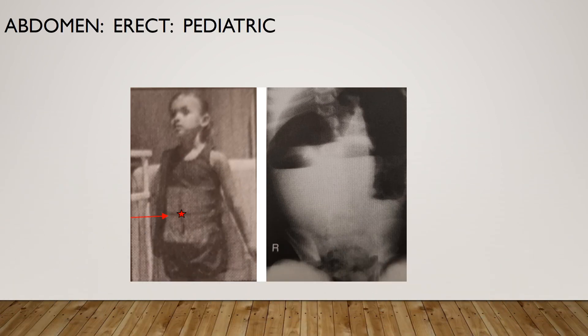For the pediatric erect abdomen, the child is standing with arms at the sides. Use parental assistance if necessary — make sure they are wearing lead and are not pregnant. For infants and young children, the central ray is one inch above the umbilicus; for older children, it is at the level of the umbilicus. On the x-ray, verify soft tissue and gastrointestinal structures, air-fluid levels on the erect, and diaphragms and symphysis pubis included if possible. Verify optimal density and contrast for soft tissue and skeletal structures with no motion. Have a good day.